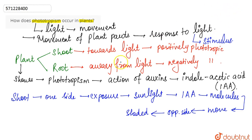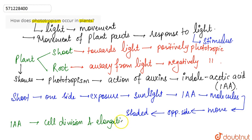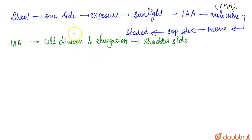So here, IAA initiates cell division and elongation more on the shaded side, whereas on the side which is exposed to sunlight, cell division and elongation does not take place.